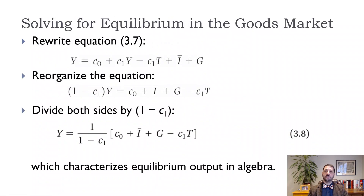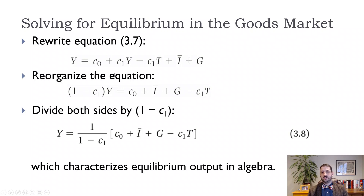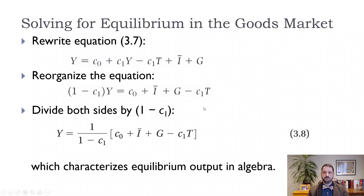So here we're actually solving for equilibrium in the goods market. We want to solve for Y, so we move Y to the left-hand side. First, distribute C1 to get C0 plus C1Y minus C1T plus I plus G. Then move C1Y to the left-hand side — it becomes negative — and factor out Y, giving us (1 minus C1) times Y equals C0 plus I-bar plus G minus C1T. Then divide both sides by (1 minus C1).